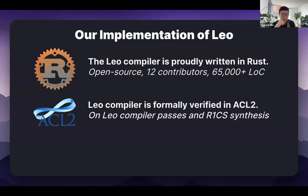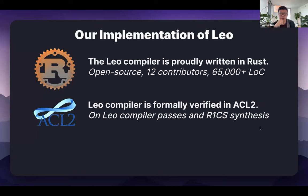One effort we've taken is to employ formal methods. There has been concern about the circuits that are constructed and the safety of programs being synthesized, because you're starting from a high-level domain and synthesizing down into polynomials. We want to make sure every optimization step is correct. We use ACL2 to do that — applying it to the compiler itself, and also to the R1CS circuits we synthesize to express the language in polynomial form.